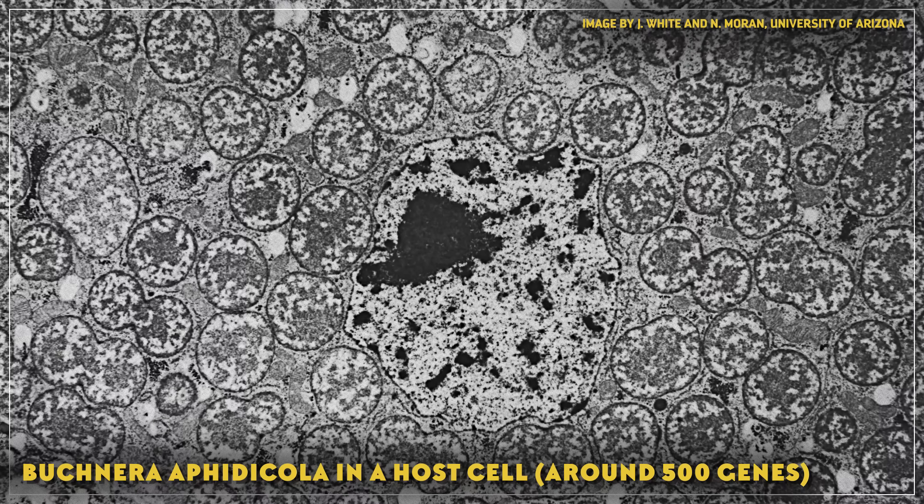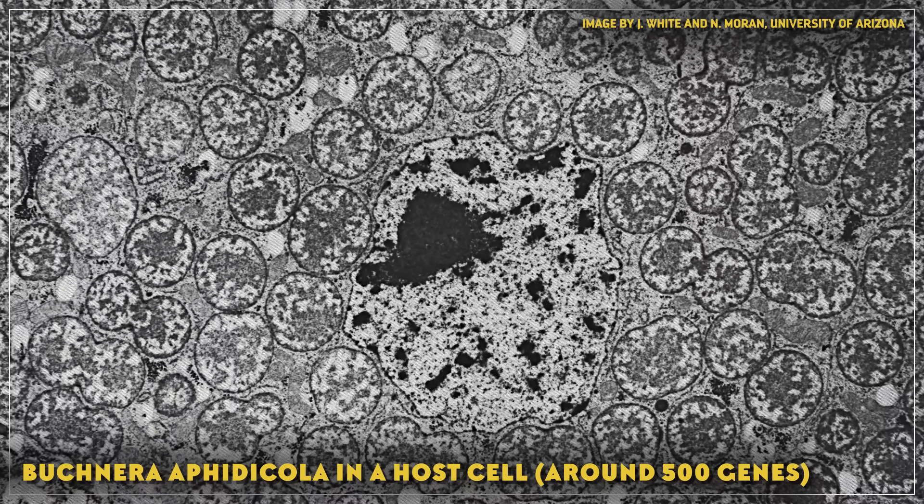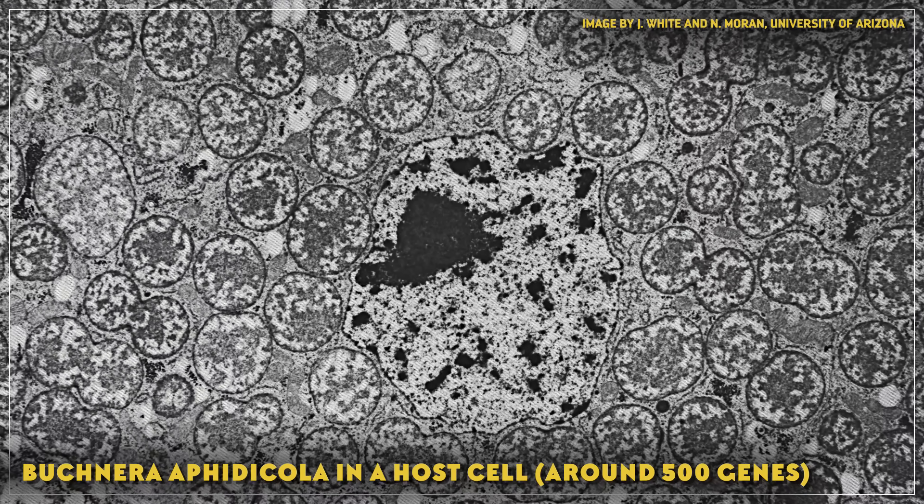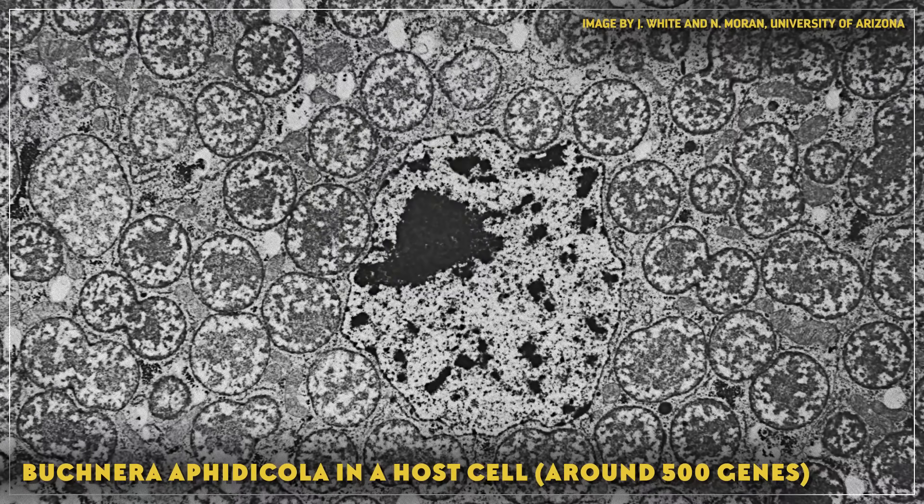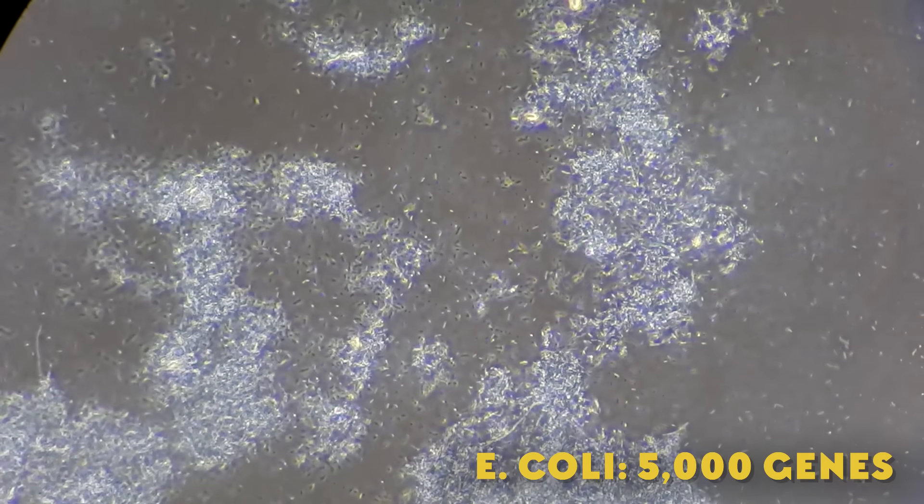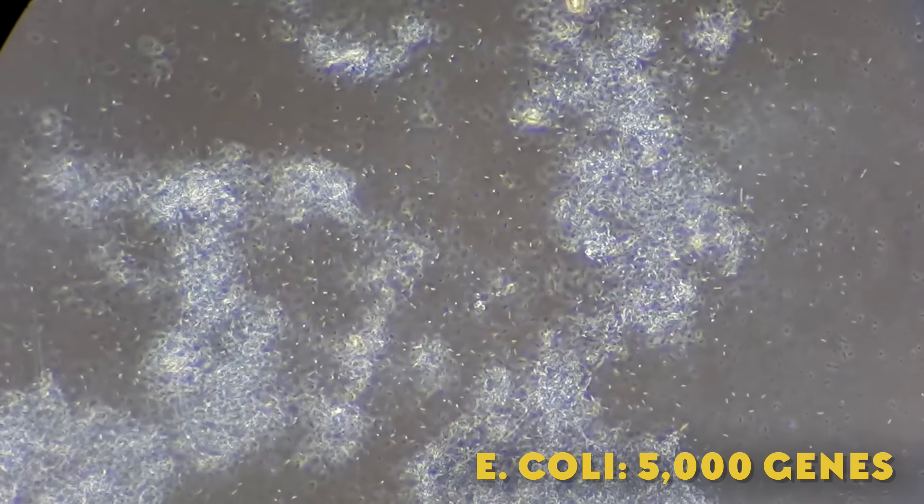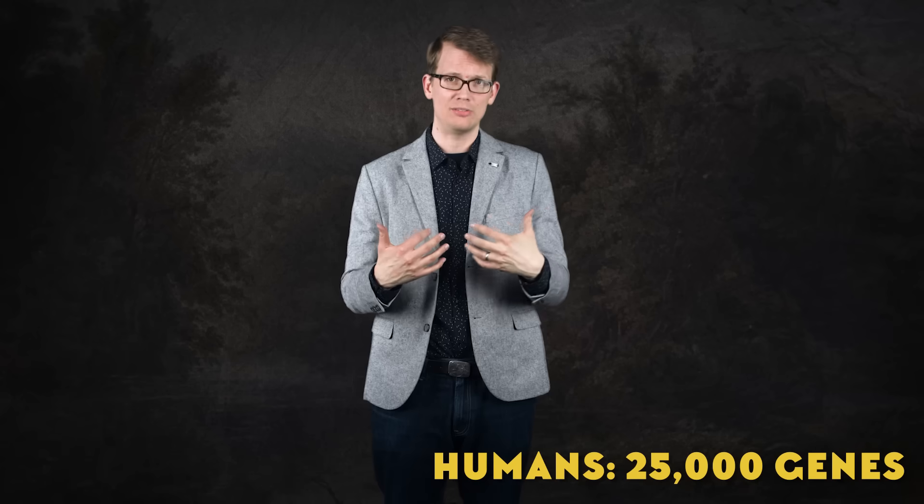Now, as genomes go, that is tiny. A few modern organisms do have about 500 genes, but they are parasites that steal what they need from their hosts instead of using genes to make stuff. Meanwhile, the bacterium E. coli has around 5,000 genes. In humans, we get about 25,000.